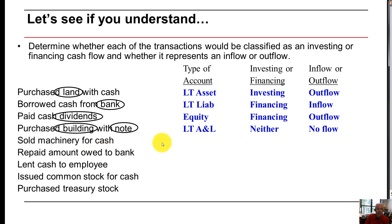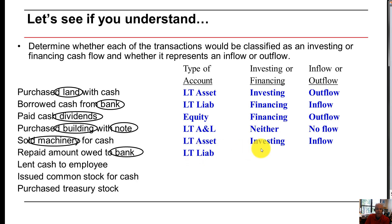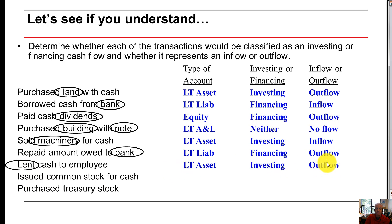We sold machinery for cash — machinery is a long-term asset, so it's investing, and since we sold it, it's an inflow. If we repay an amount owed to a bank, that's a long-term liability reported in financing, and since we repaid it, it's an outflow. We lent cash to an employee — that's a long-term asset, investing, and since we lent the money, cash went out, so it's an outflow. Issuing common stock for cash is equity, goes in the financing section, and is an inflow because cash came in.